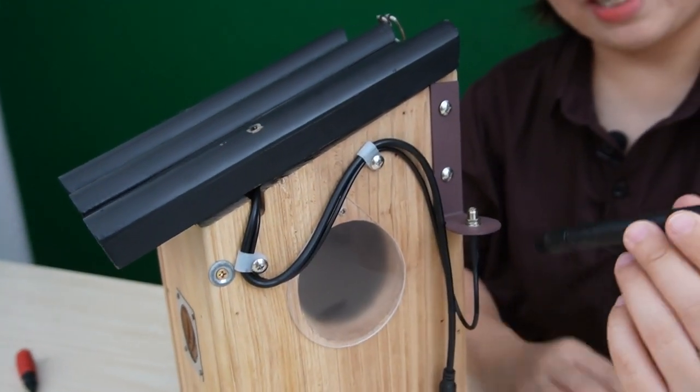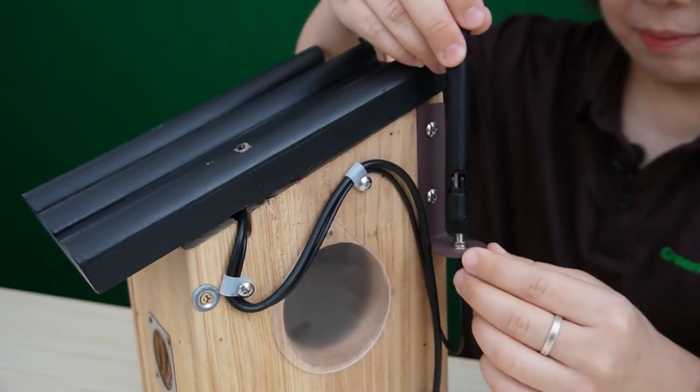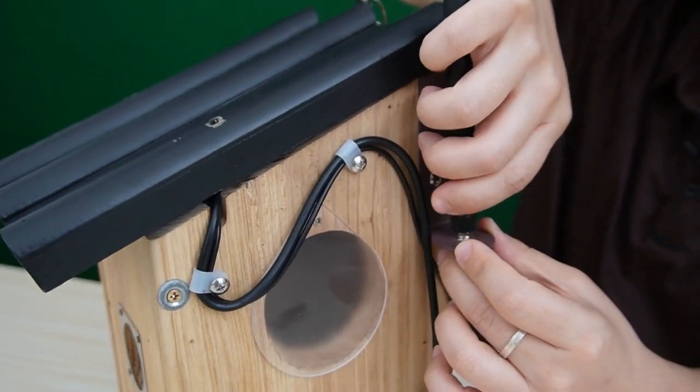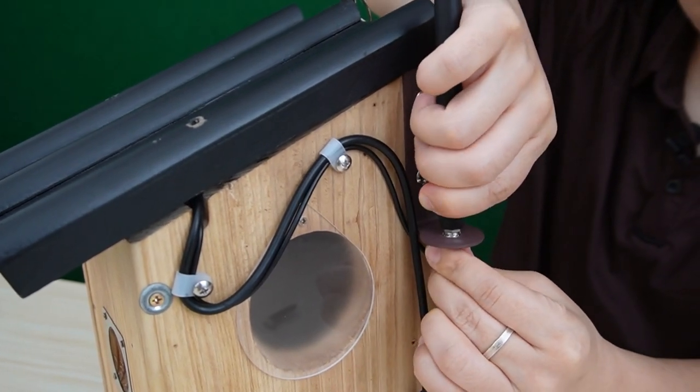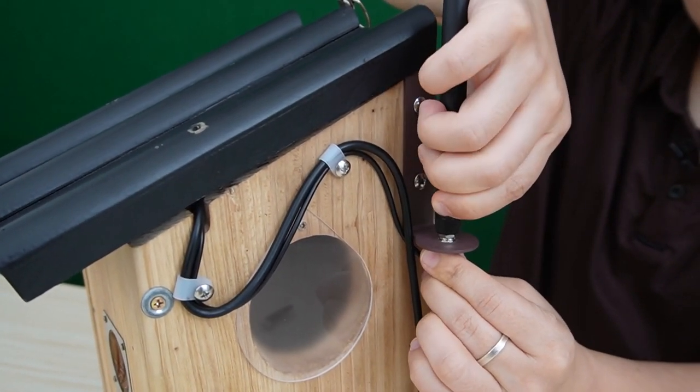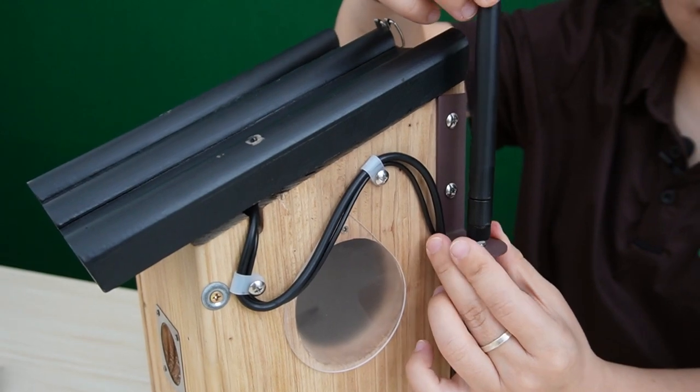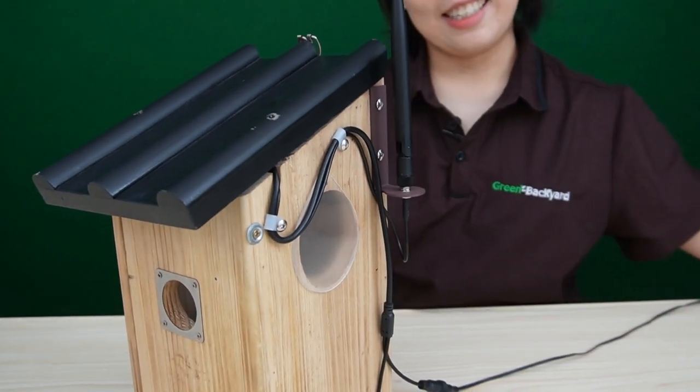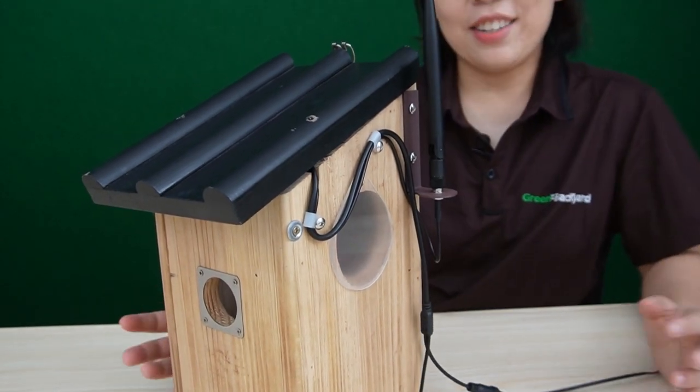So the last step, we are going to install the antenna. Screw it tightly to our birdhouse. So there you have it.